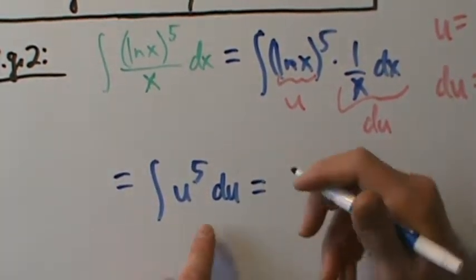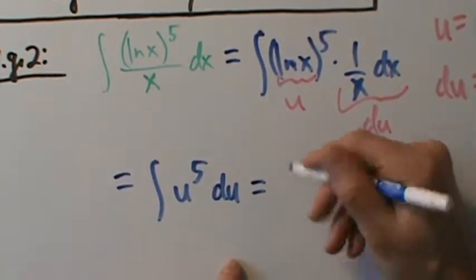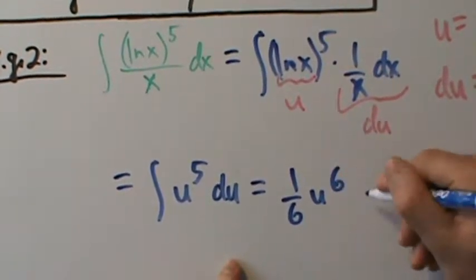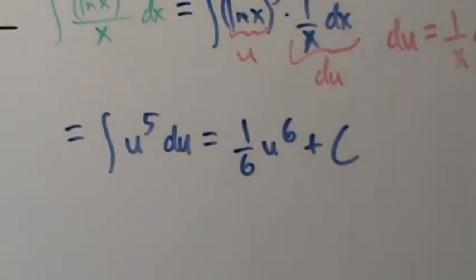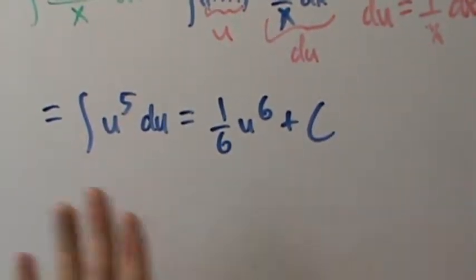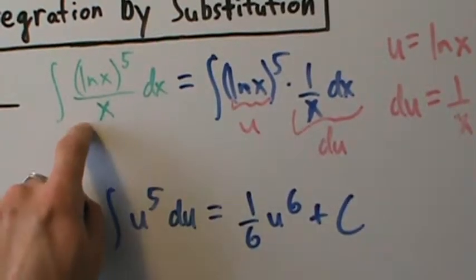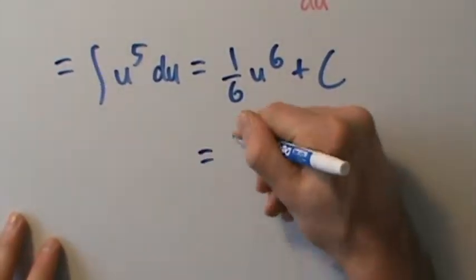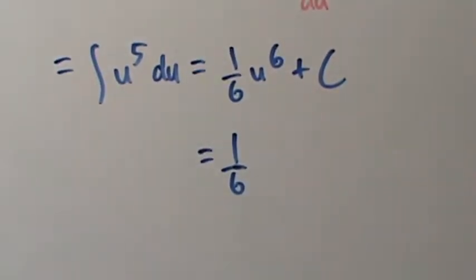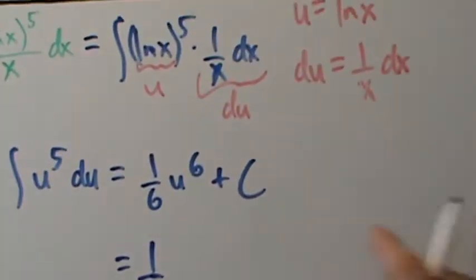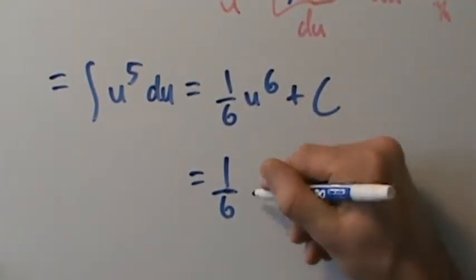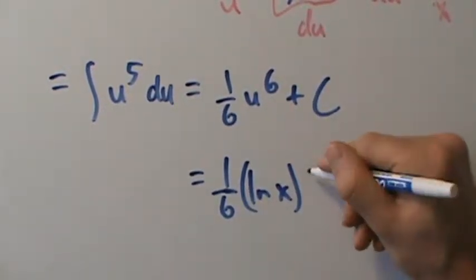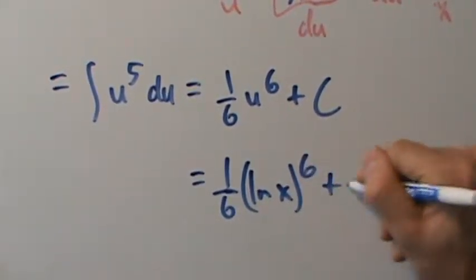So u to the fifth du — when we integrate that, that's just going to be 1 sixth u to the sixth, plus C. But remember, we're not done yet. We have to go back to x because the original problem was in terms of x. So this is going to be 1 sixth times — remember, u is the natural log of x — so this is going to be 1 sixth times natural log of x, with parentheses, raised to the sixth, and then plus C.